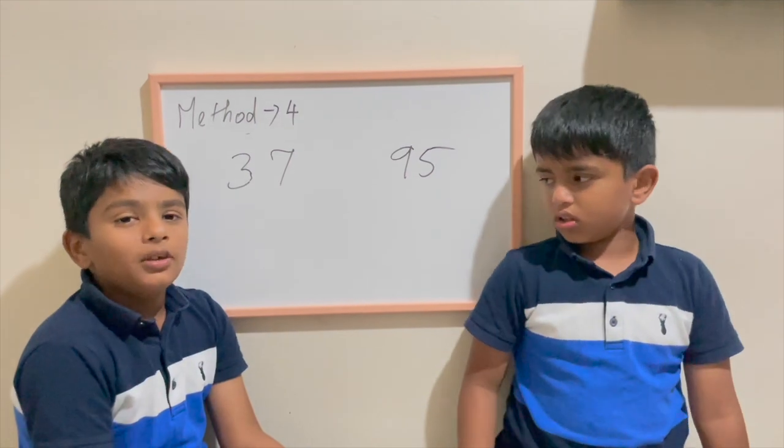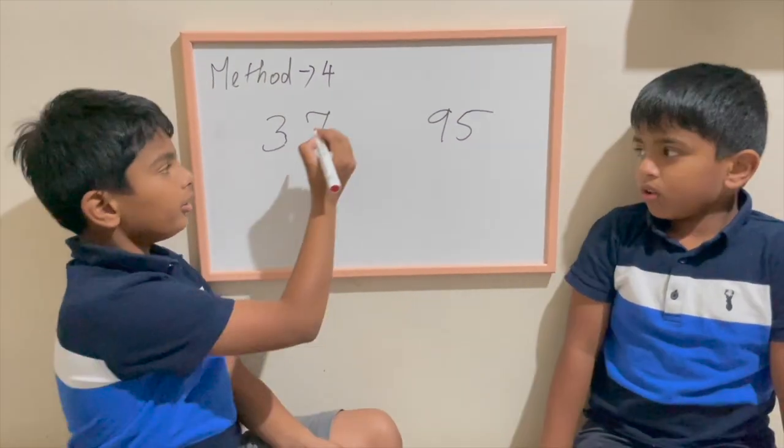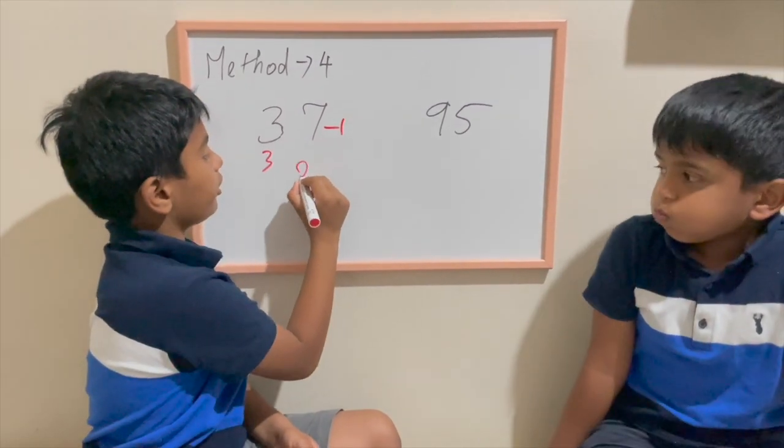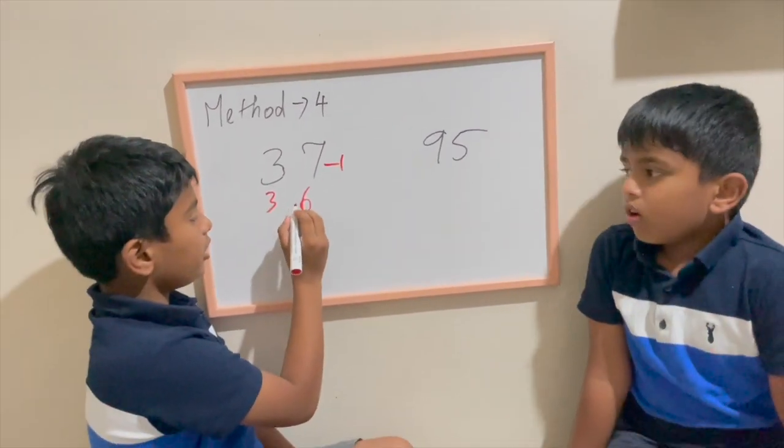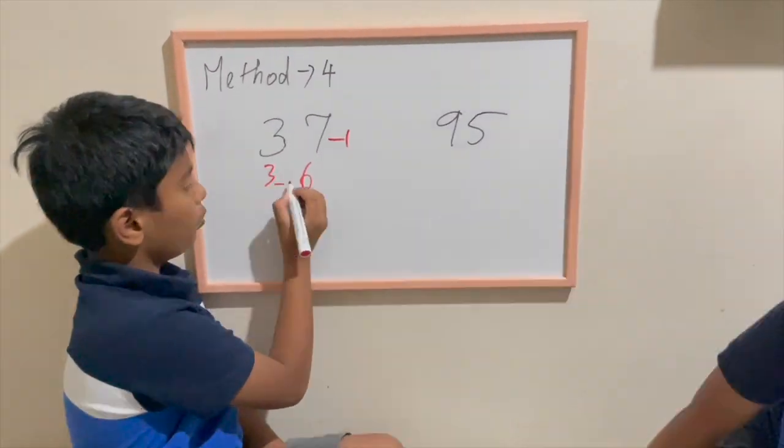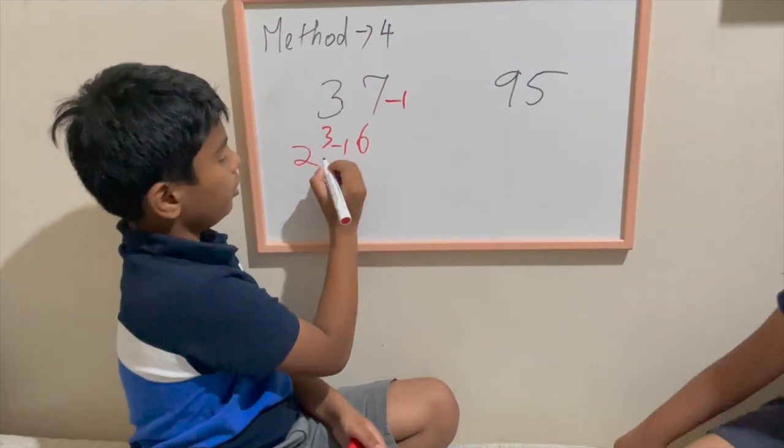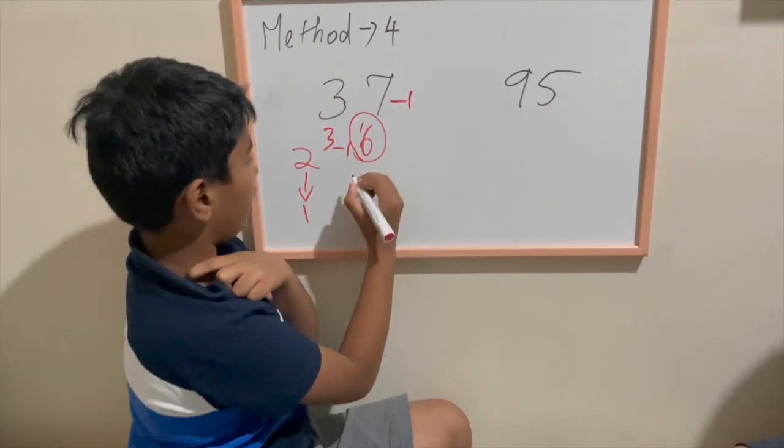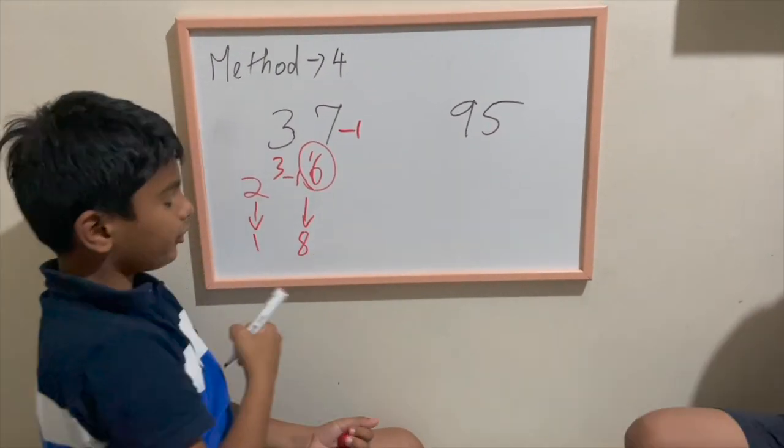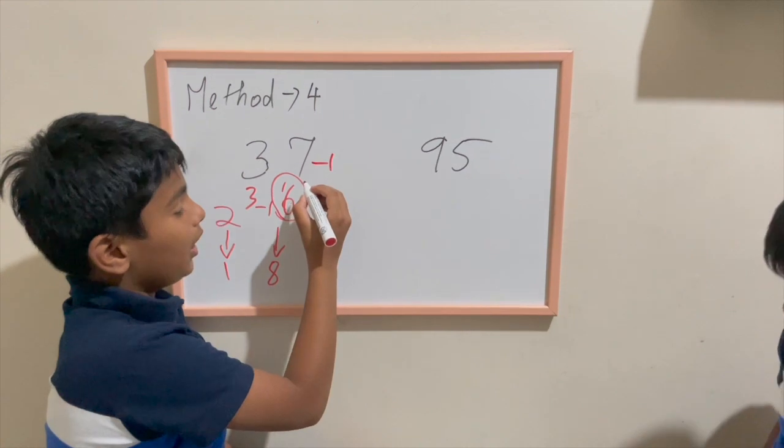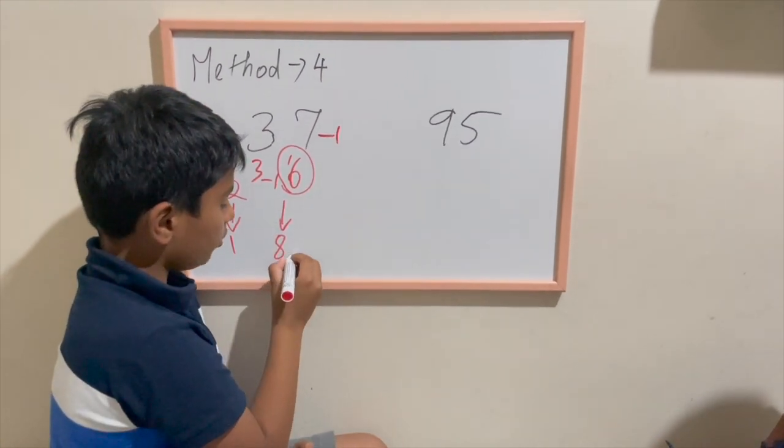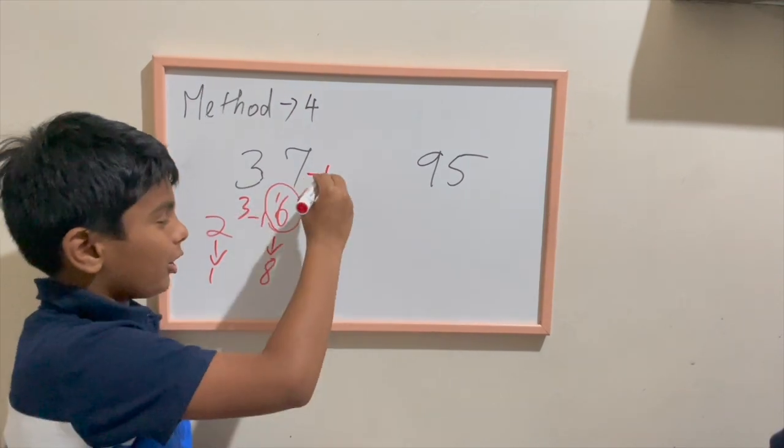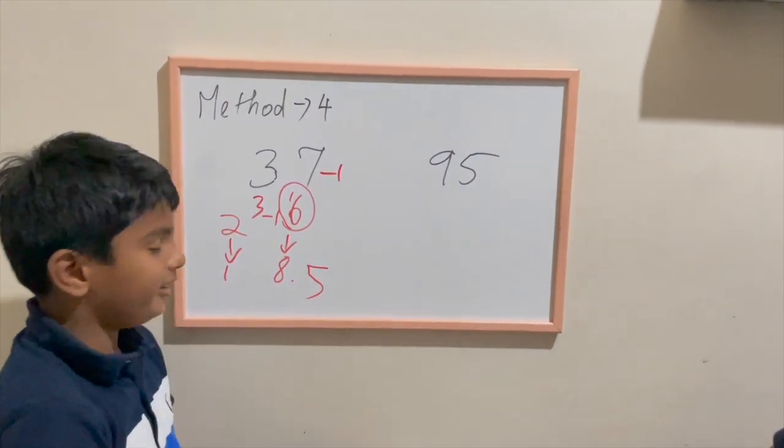So 37 minus 1 equals 36. Now 36, so 3 minus 1 equals 2. Now the 1 must go here, so that makes 2 half 1, 16 half 8. The answer is 8. And the odd number is carry 1, so now 18. But that's not the answer. We have a carry 1, 0.5, 18.5.